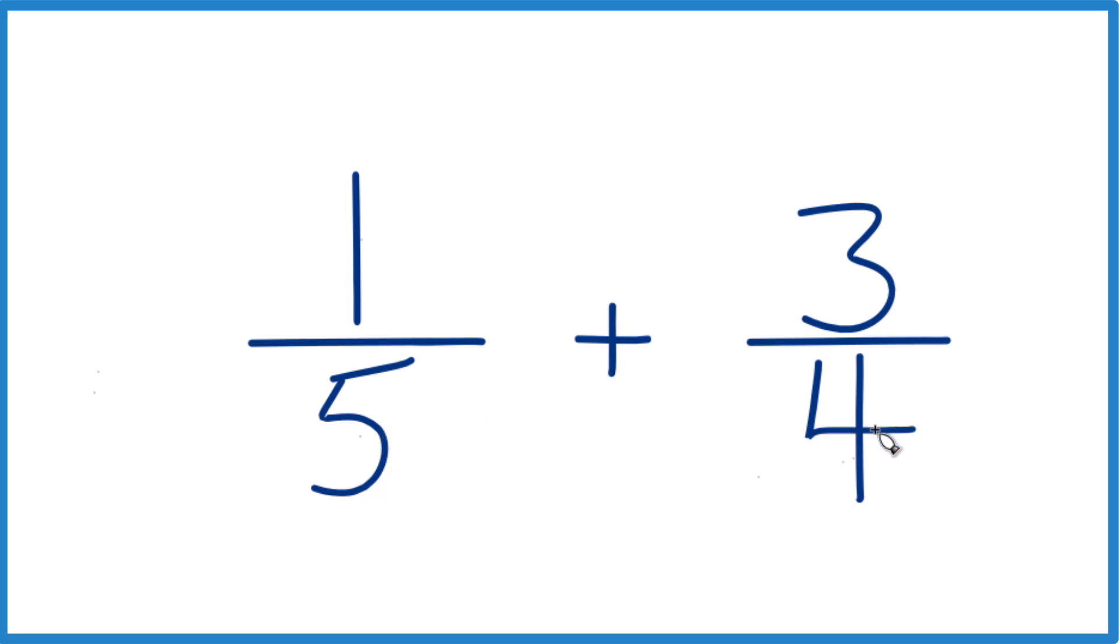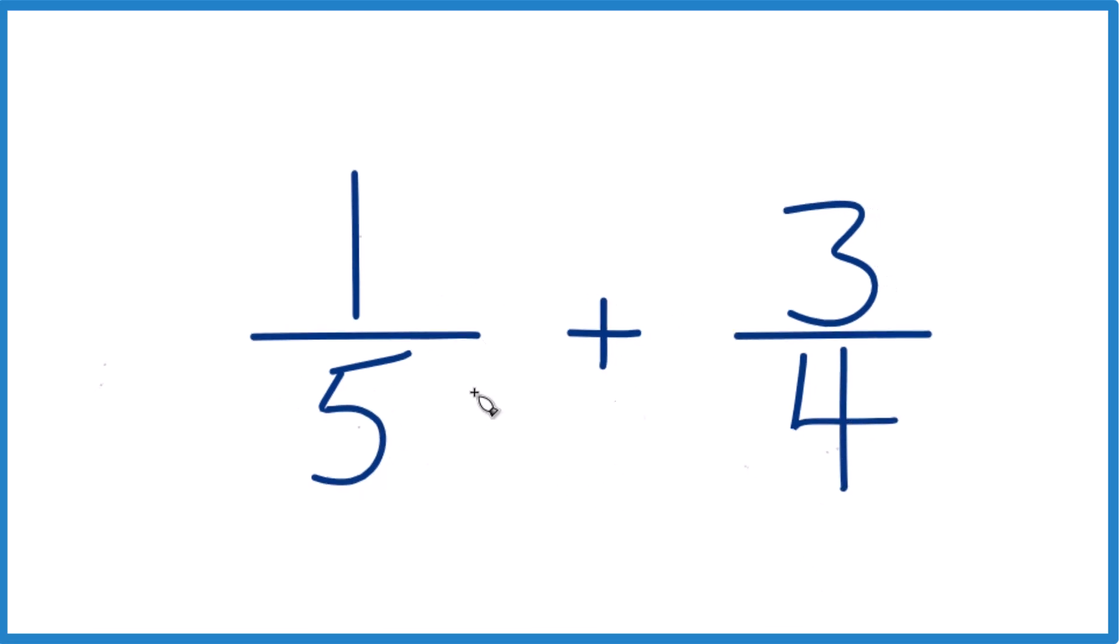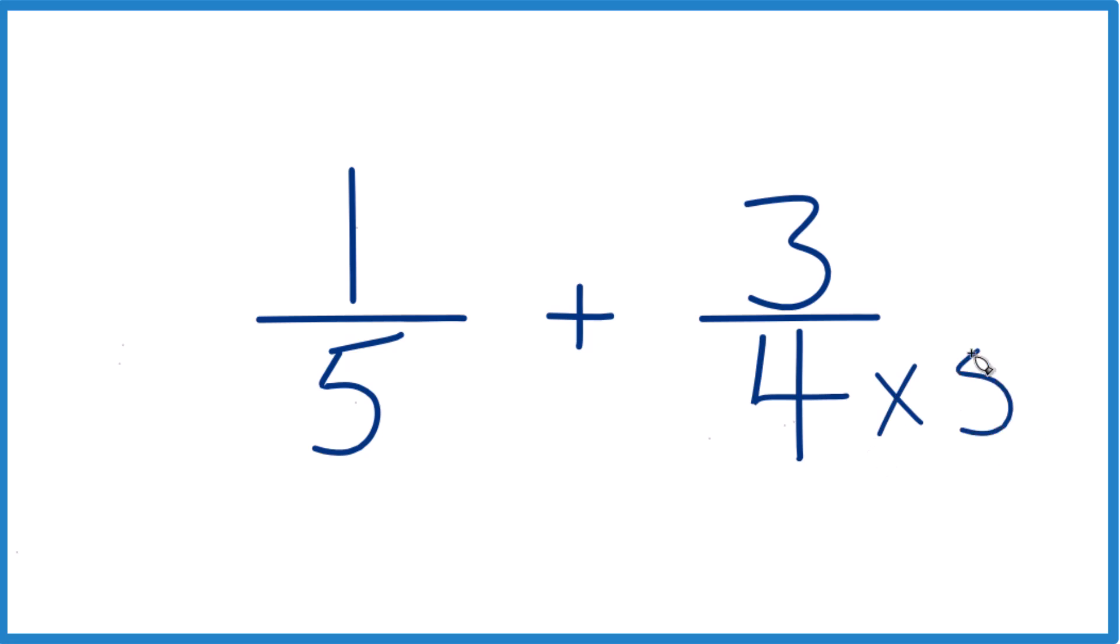Let's do this. Let's take 5 times 4, and then 4 times 5. So 4 times 5, that'll give us 20. Over here, 5 times 4, that'll give us 20. We'll have the same denominator.